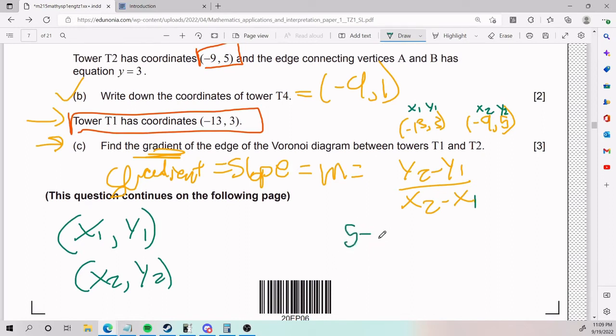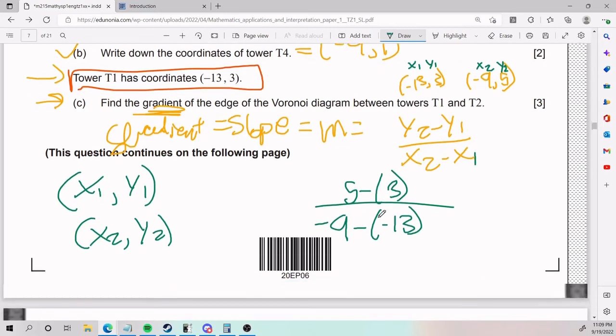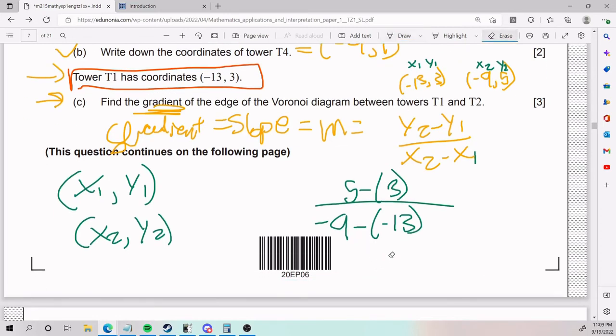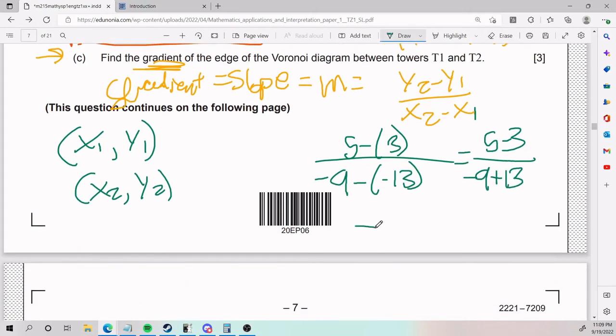Once you do that, plug in. Y2 we said was 5 minus y1 which is 3. Plug in with parentheses because that way you avoid double negative multiplications and issues like that, which is about to happen actually. x2 is negative 9 minus x1 which is negative 13. If you always plug in with parentheses, it's going to be very apparent when you have a double negative multiplication. So on top we have 5 minus 3. On the bottom we have negative 9 plus 13 because it's double negative. This ends up being 2 divided by 4. That took me a little bit harder. I really thought about that one for a while. So the gradient is, well, it's one half.